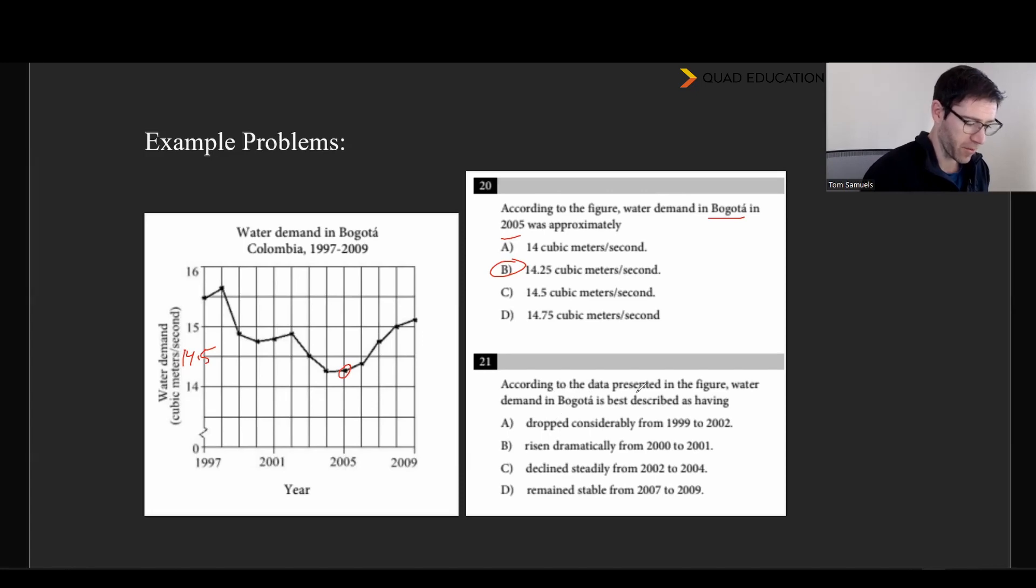And so with the next one, according to the data presented in the figure, water demand in Bogota is best described as having... And so without looking at the answers, as is good practice, I'm going to say it kind of goes down. It goes back up. So it hits a low, a trough, if you will, in 2005 and it's gone back up. And so dropped considerably from 99 to 2002. I mean, I suppose, yeah. Risen dramatically from 2000 to 2001. I wouldn't call it dramatic because this is much more dramatic here. Sorry, this is declined steadily from 02 to 04. So there's 2002 and there's 2004. That is a steady decline.